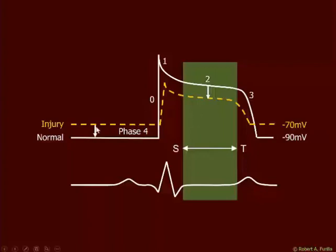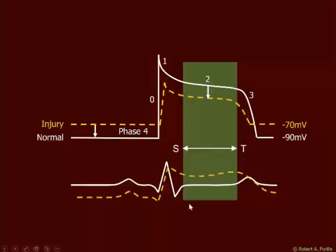In this example, there's a positive flow from the injured region to the healthy sites during diastole, and also a positive flow from the healthy sites to the injured sites during systole. One would expect, then, that if the flow is moving away from the recording electrode we should see a diastolic depression, and if flow is moving toward the injured myocytes, we should see a systolic elevation.